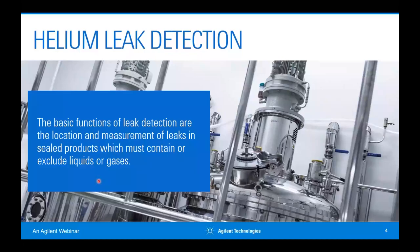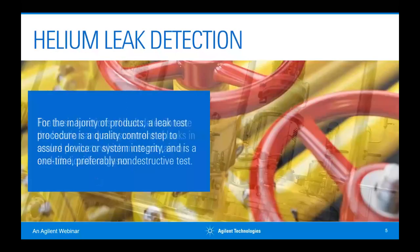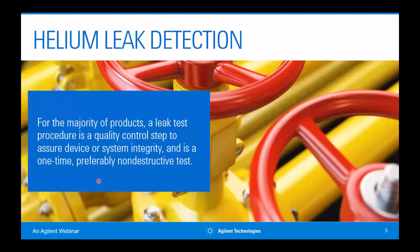We're trying to locate and, in many cases, measure a leak within a sealed product, chamber, or device — anything where we're trying to either keep something in or prevent something from escaping, whether it be a pipe, valve, chamber, or very small product. In general, this is a quality control test. We're trying to make sure that whatever we're concerned about has the integrity it needs, and we want to do this in a non-destructive way.